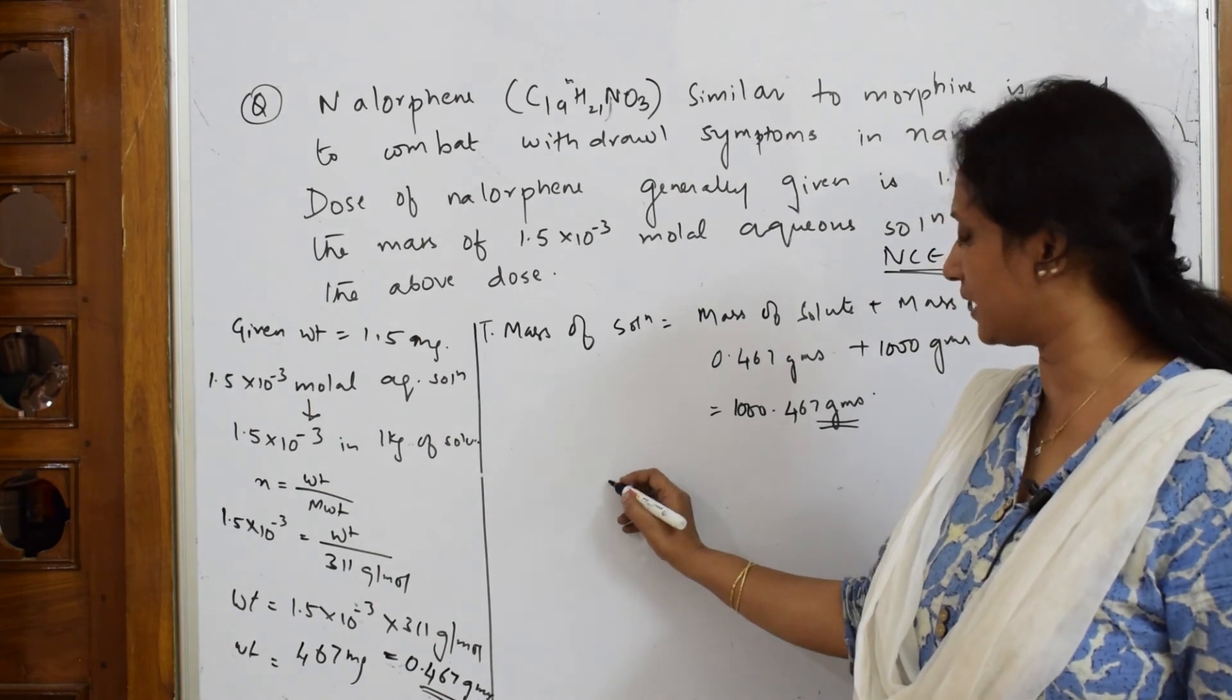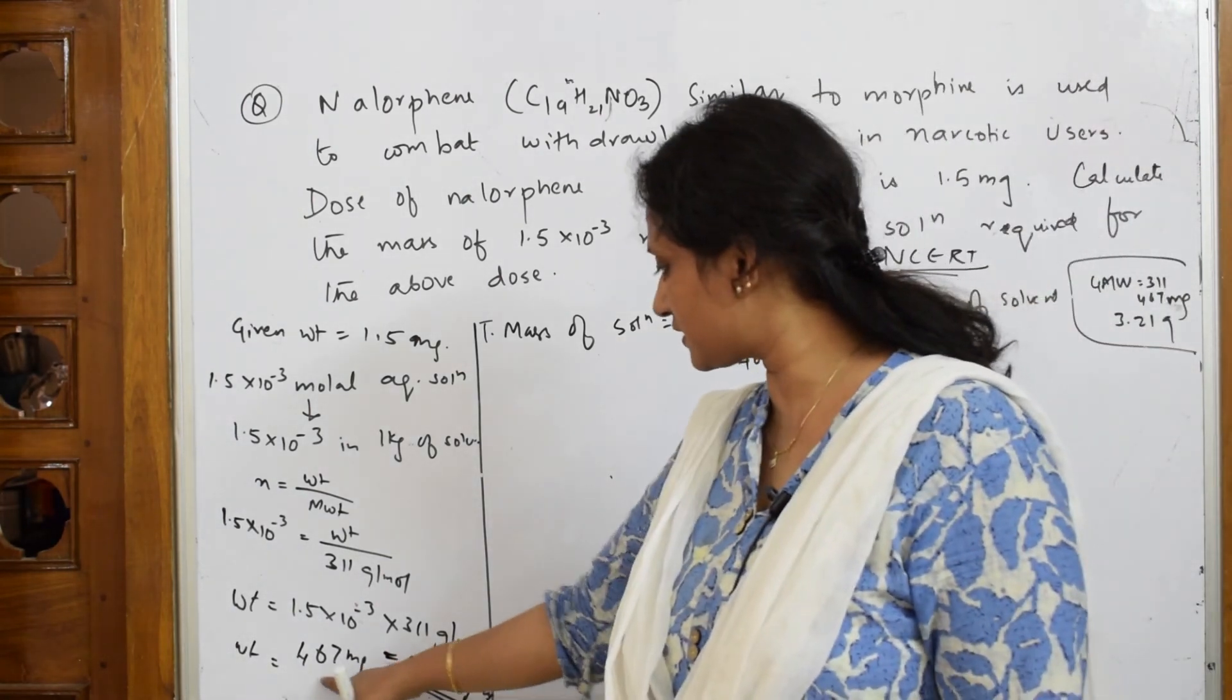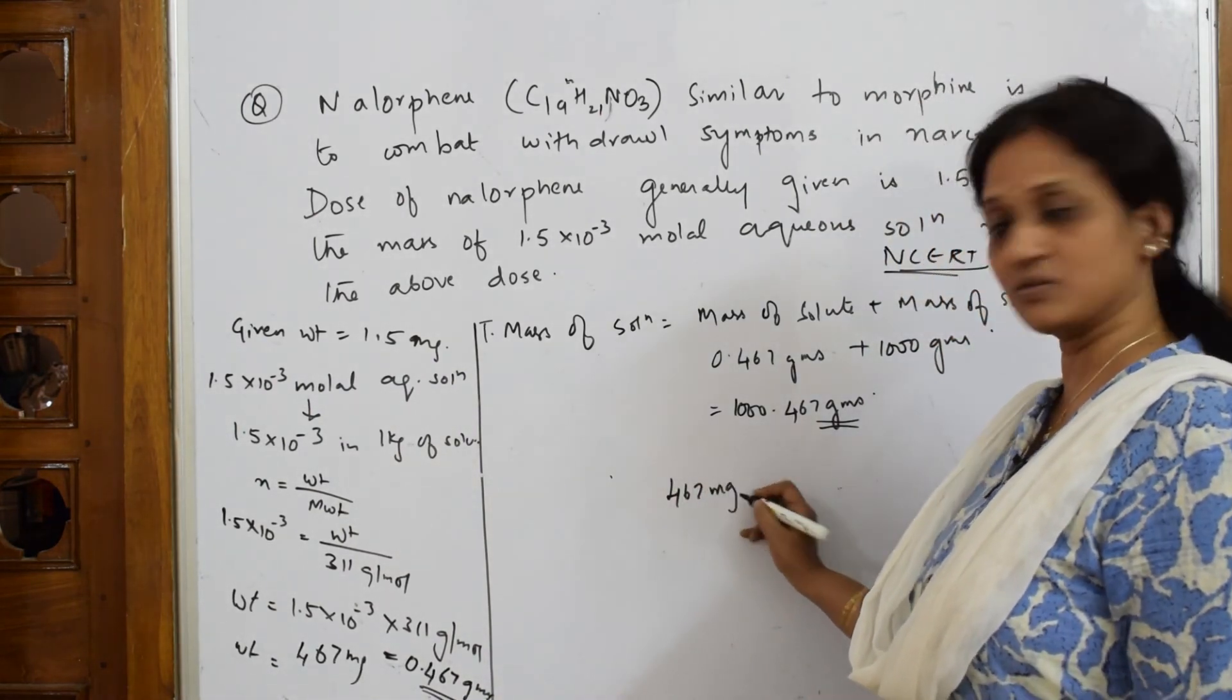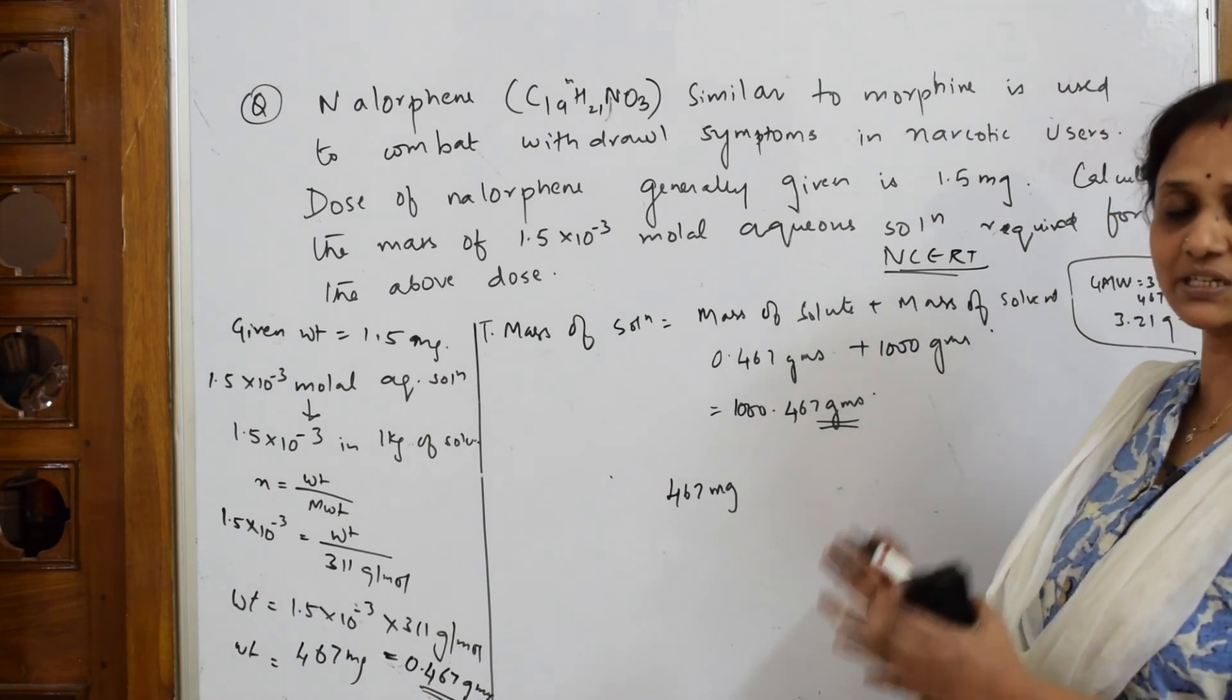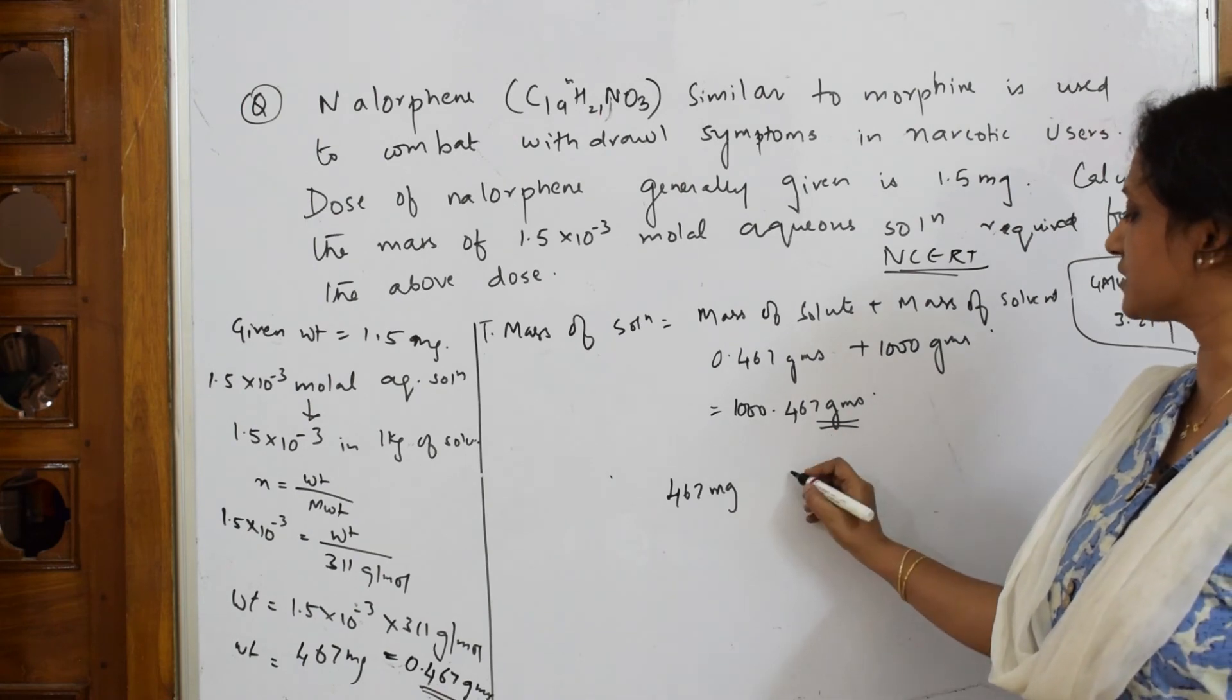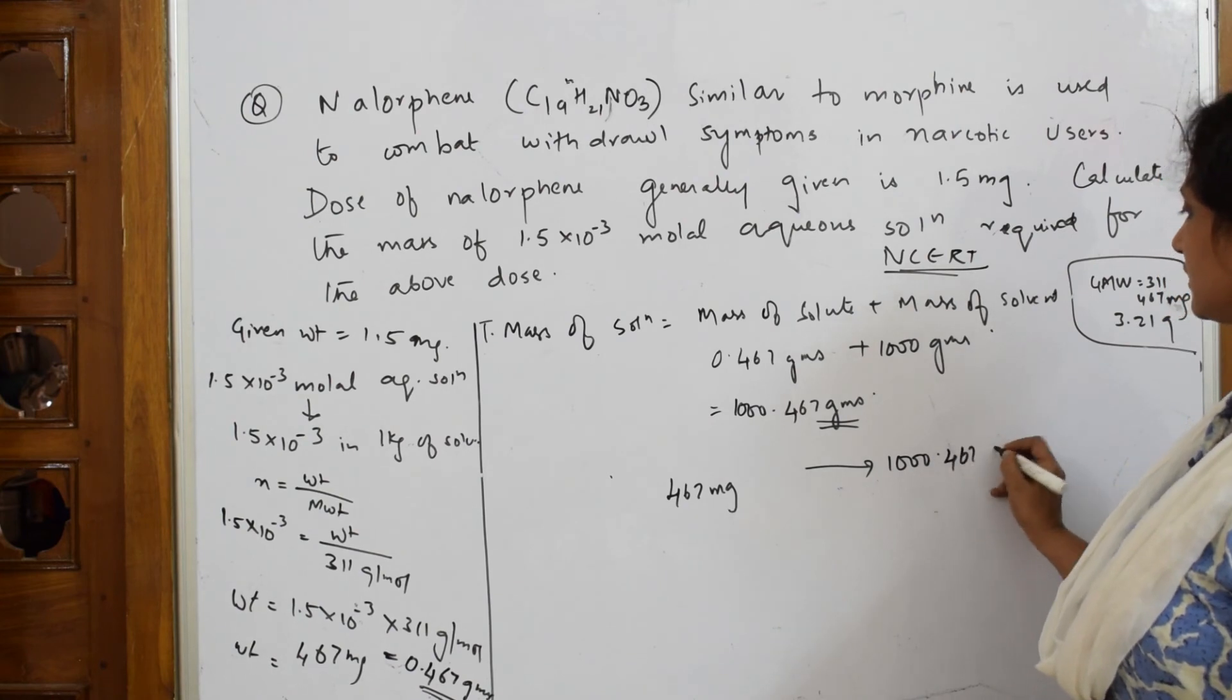We got 467 milligrams of this particular dosage of that drug. What is the total amount present? It is present in 1000.467 grams of solution.